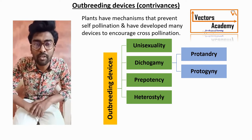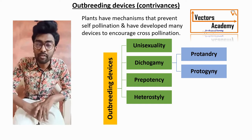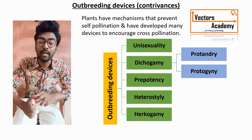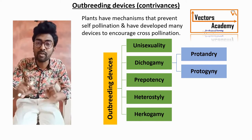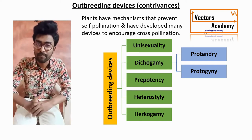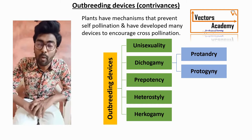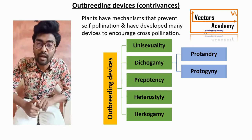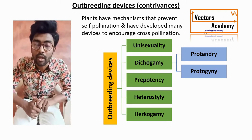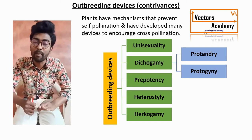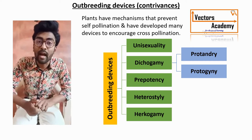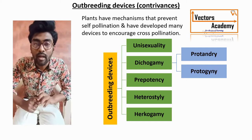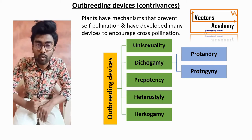The best example for heterostyly is primrose. The fifth outbreeding device is herkogamy, which is the only mechanical device used to prevent self-pollination. In herkogamy, as seen in the plant Calotropis, a pentangular stigma is generally developed over the anther. That is herkogamy.